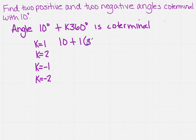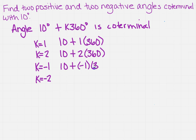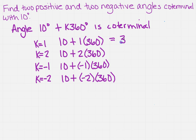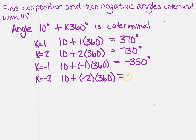Now I'm just going to plug those into each one of these formulas. It's just like college algebra all over again. Remember, this time it's a negative, so I'll put that in a set of parentheses. You can use your calculator, or if you can do it by memory, that's what you want to do as well. For k equals 1, I get 370 degrees; for k equals 2, I get 730 degrees. For k equals negative 1, I get negative 350 degrees. It's really important that you include the degrees symbol so you don't confuse it with radians. So 370 and 730 are your two positive coterminal angles.